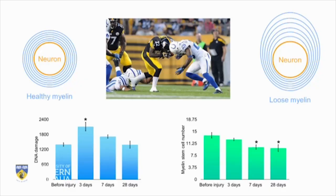To study this, I induced neurotrauma by partially cutting a nerve in a rat. I then investigated the areas affected by the secondary phase of injury around this first cut. The blue histogram, looking at the DNA damage in these myelin stem cells, shows a significant increase as early as three days after the initial cut.